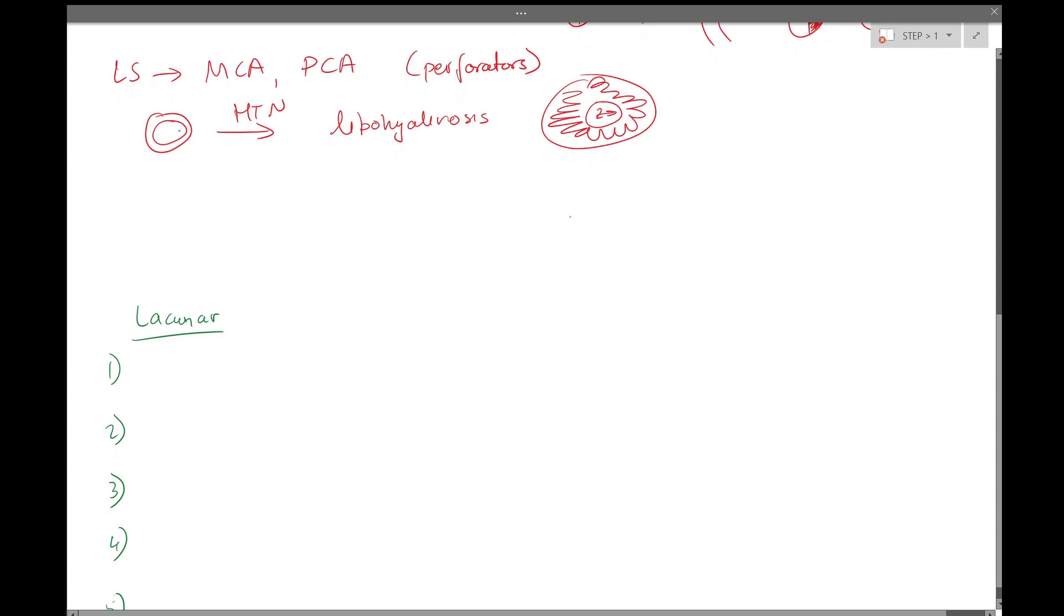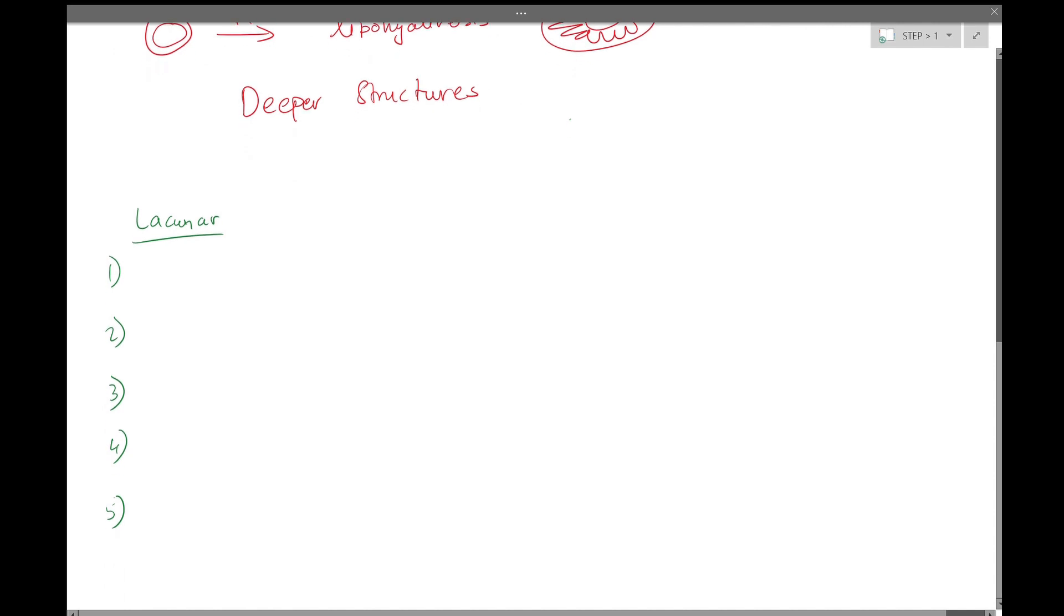When we have strokes of these particular vessels, they generally feed the deeper structures of the brain, and the stroke syndromes are divided into five lacunar syndromes. So let's go ahead and review some of the anatomy here.